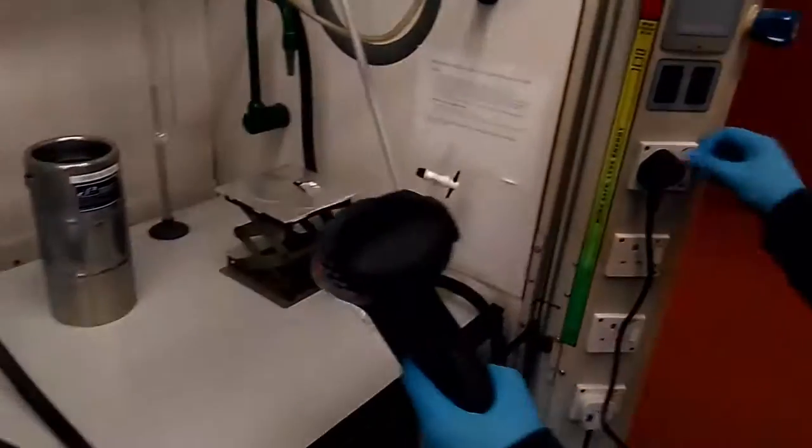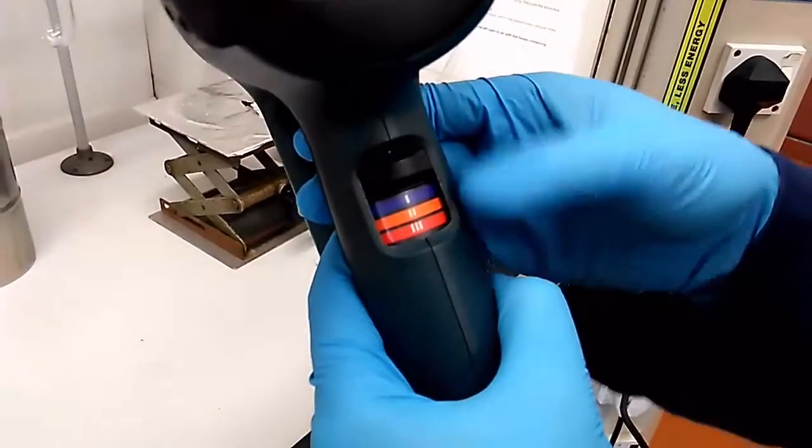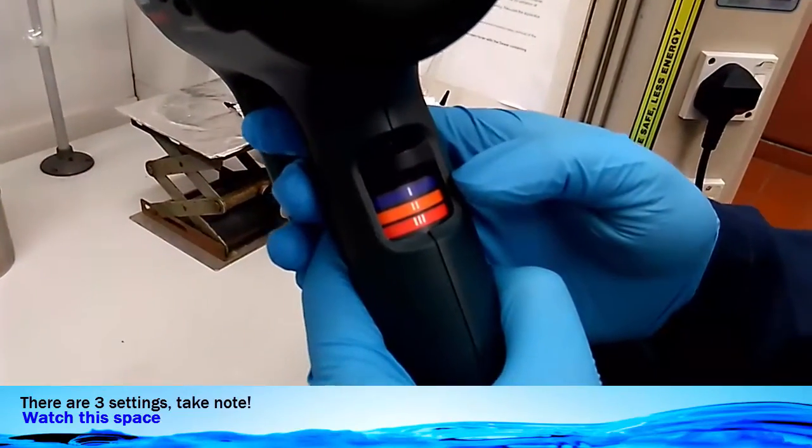This is a Bosch hot air gun, model GHG 600-3. Here you see three settings: setting number 1, 2, and 3.